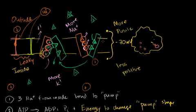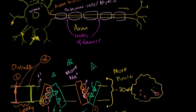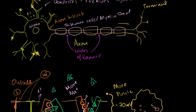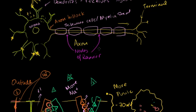I said that this was the foundation for understanding how neurons actually transmit signals. And to understand that, I'll kind of lay a foundation over that foundation, and then the actual neuron transmission will make a lot of sense. It'll also make sense why they have these myelin sheaths and nodes of Ranvier, and why we have all of these dendrites. Hopefully it'll all fit together.